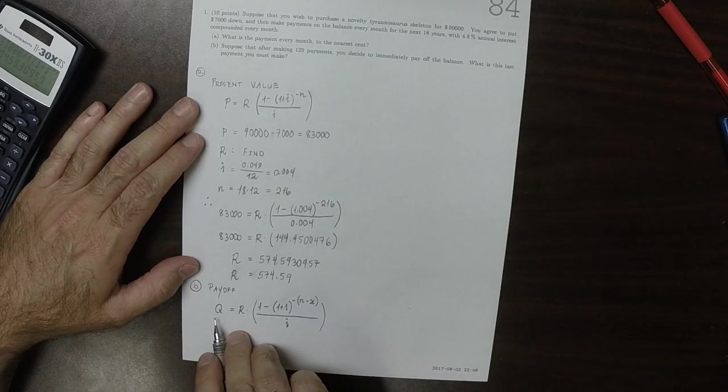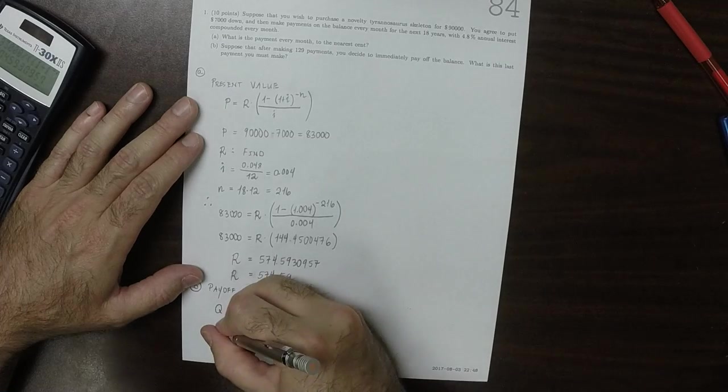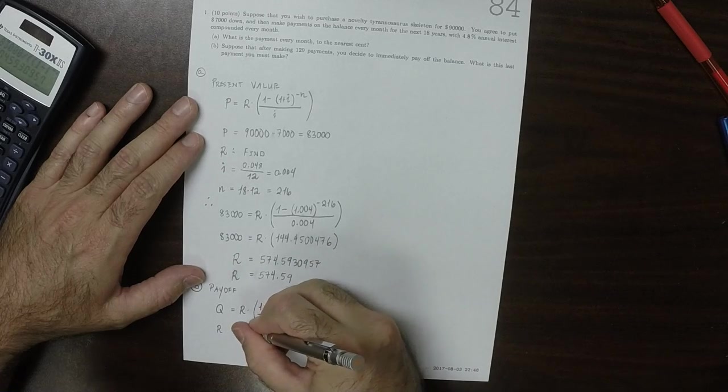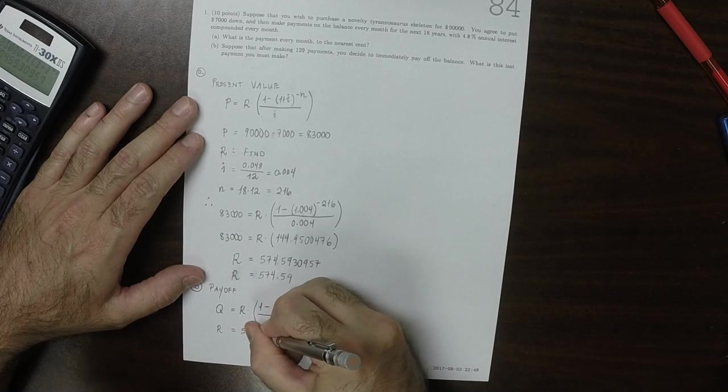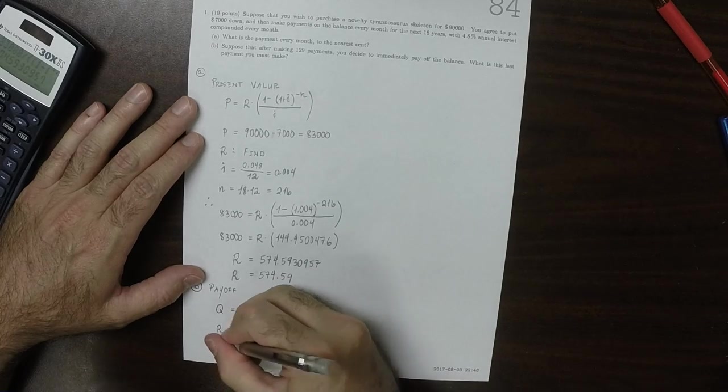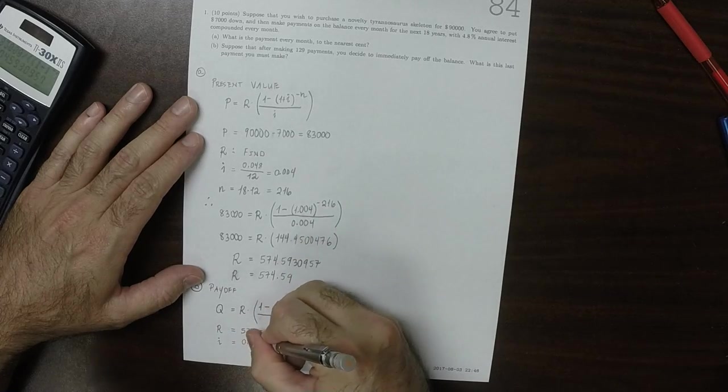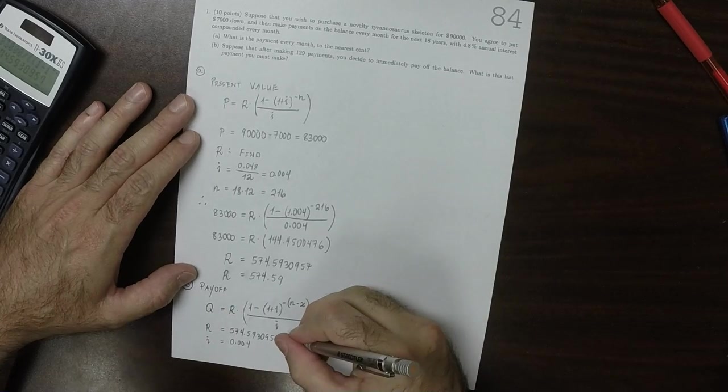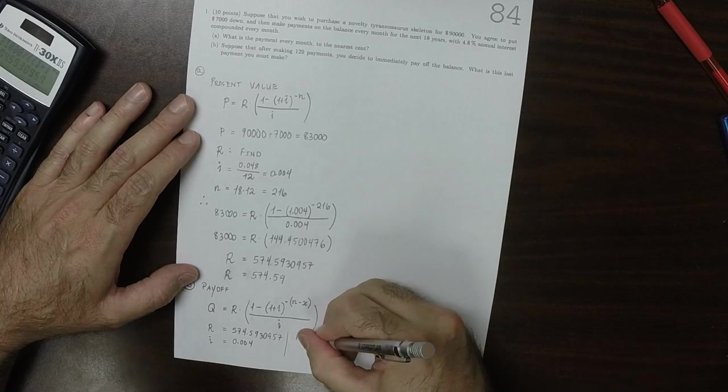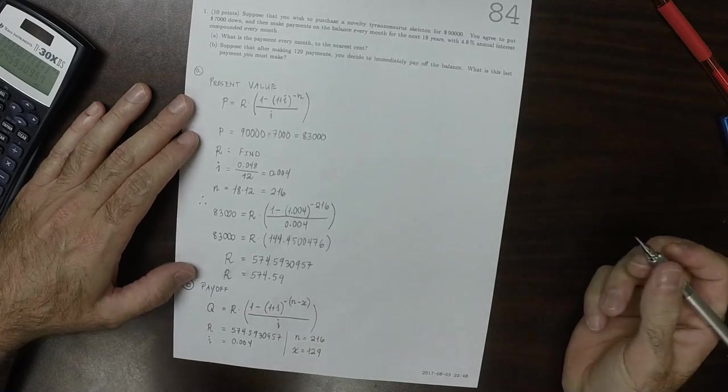And Q is the payoff amount, and what we're going to do is we'll use R is this unrounded value from before, so 574.5930957. I is the same value as before, that's 0.004. N is the same value as before, 216. And now the new value, X, is 129. That's how many payments we've made.